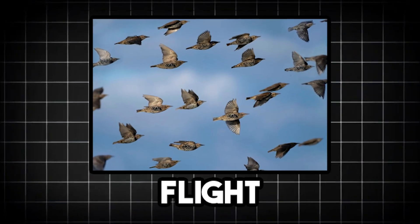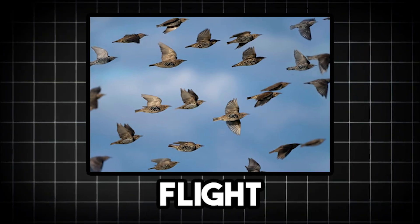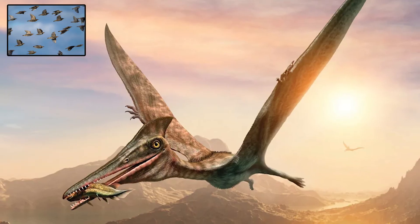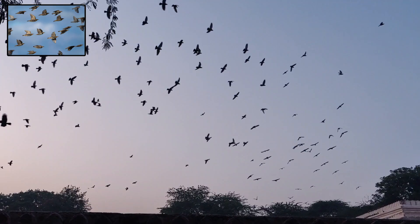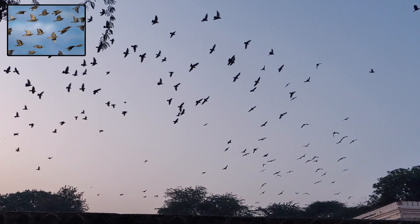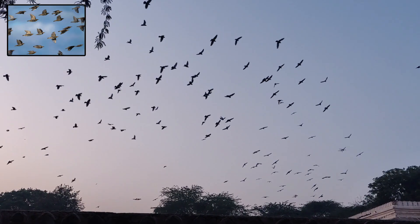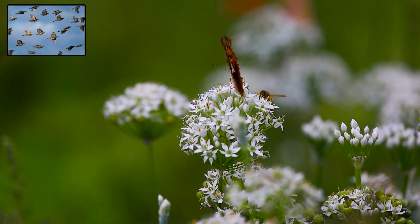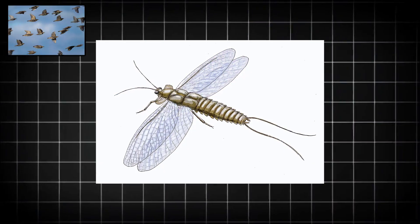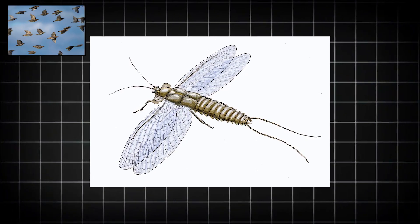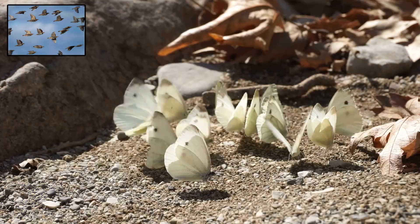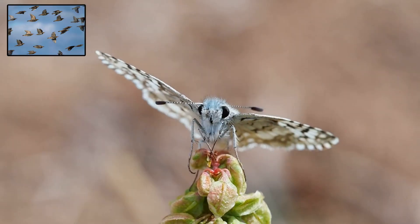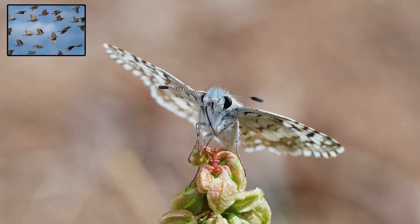Flight is the ability to move through air by generating lift and overcoming gravity. It evolved independently in several groups of animals, including insects, birds, bats, and even some extinct reptiles like pterosaurs. The earliest flyers were insects, which took to the skies over 300 million years ago. Their wings evolved from extensions of the exoskeleton, and their small size and lightweight bodies made flight possible. Insects like dragonflies and butterflies became great at aerial movement, using flight to find food, escape predators, and locate mates over large distances.